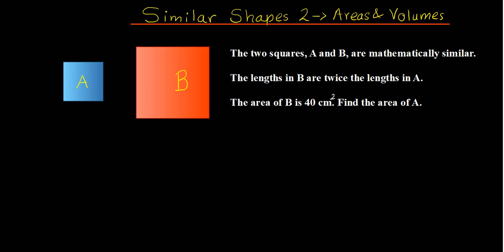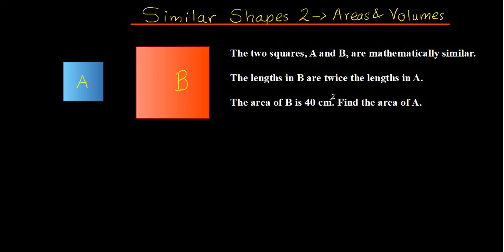The first question: two squares A and B are mathematically similar. One is an enlargement of the other. The lengths in B are twice the lengths in A, so that gives us our scale factor of length, which is 2. The area of B is 40 centimeters squared.